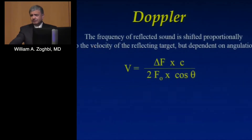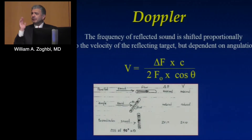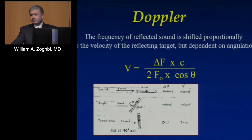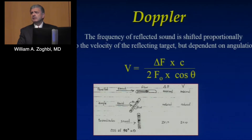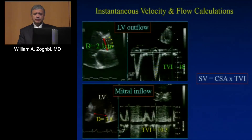This is the Doppler equation — not to scare you. The key point is there is a factor of an angle. If we don't have good angulation — meaning parallel to flow — you will underestimate the frequency shift and the velocity, throwing a wrench into your calculations of gradient or valve area. For sonographers and echocardiographers: make sure you are not angulated. Keep that angle less than 20 degrees and use multiple windows to acquire velocities, gradients, and flow.